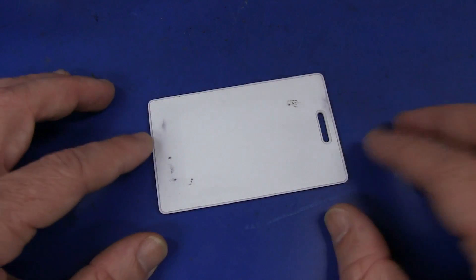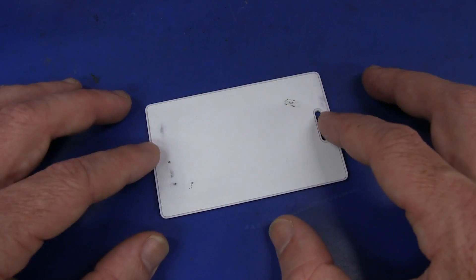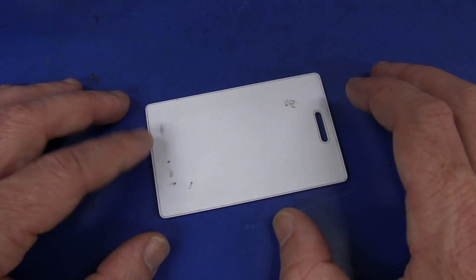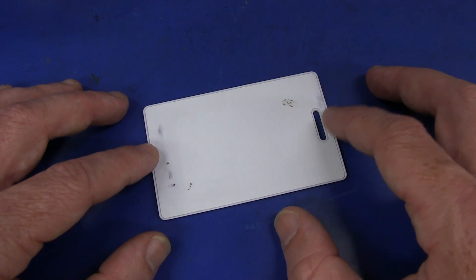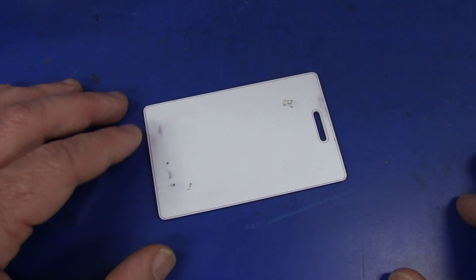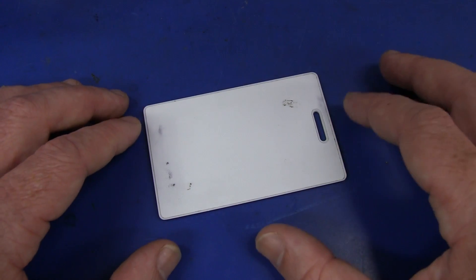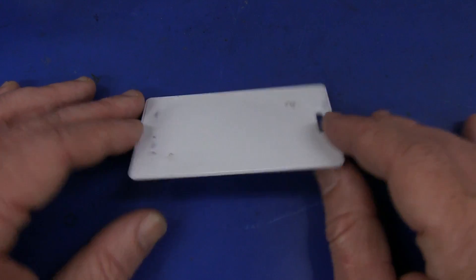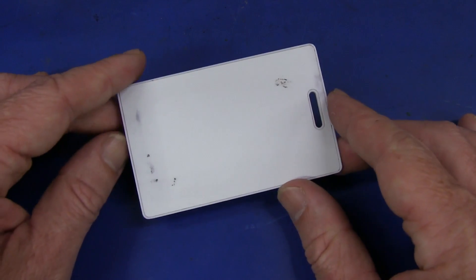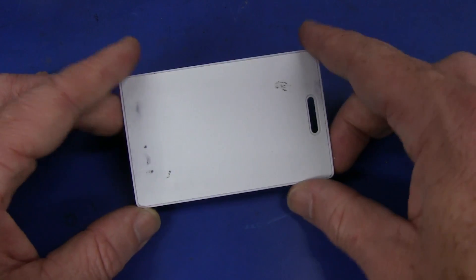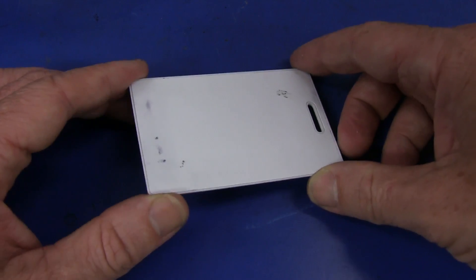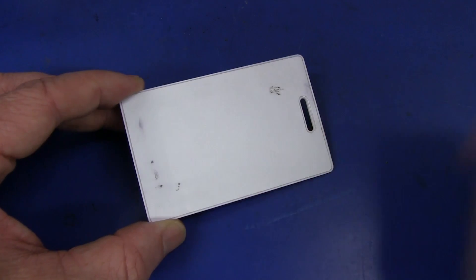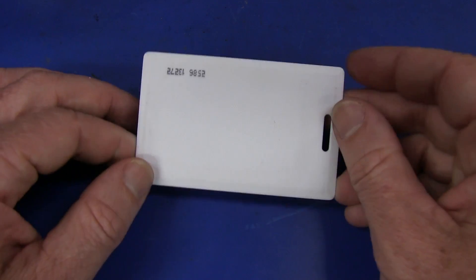I believe this might be a HID brand 125 kHz card, and apparently there is a lot of trouble copying the HID cards. The generic reader I've got claims to do some variation of HID 125 kHz card, but it certainly could not read this one, so it was no good.